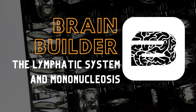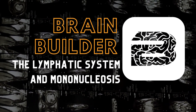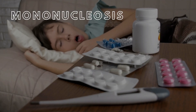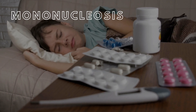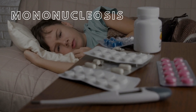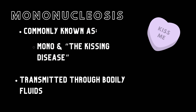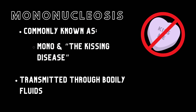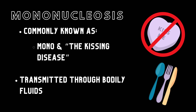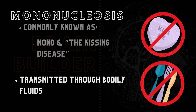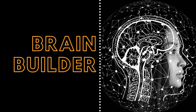Today, we are going to look at a BodyViz brain builder about the lymphatic system and mononucleosis. Mononucleosis, commonly known as mono, is a common disease among children and young adults. It has earned the nickname the kissing disease due to its ease of transmission through bodily fluids such as saliva, meaning that kissing with mononucleosis can lead to contagion. Sharing food utensils or a glass with someone contagious can also facilitate spreading this disease. In this brain builder video, we will learn more about the anatomy of the lymphatic system as well as the symptoms, causes, and treatments for mononucleosis.